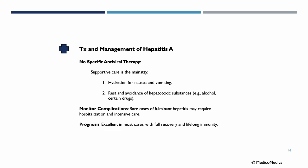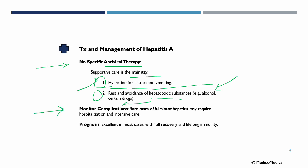For treatment and management of Hepatitis A, there is no specific antiviral therapy — supportive care is the mainstay. This includes hydration for nausea and vomiting, rest, and avoidance of hepatotoxic substances like alcohol or certain drugs. We monitor for complications, as rare cases of fulminant hepatitis may require hospitalization and intensive care. Prognosis is usually excellent with full recovery and lifelong immunity.